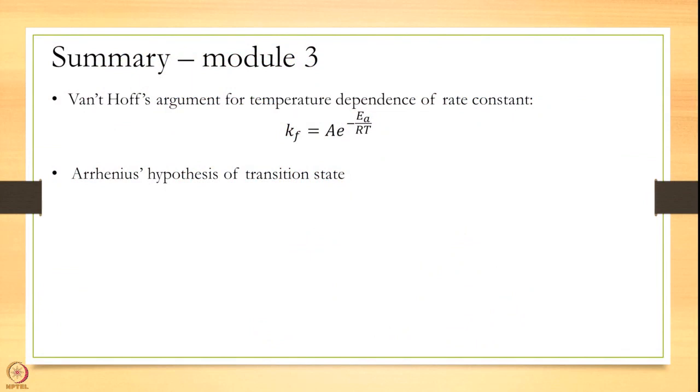In summary for this module we have looked at the analysis given by Van't Hoff, his argument on how he got the rate constant to be something like A into e to the power of some energy over RT. And we also looked at how Arrhenius looked at that equation and presented a physical picture out of it. Specifically he hypothesized the existence of transition state which is critical in our understanding of rate laws. So, with that we end today. Thank you very much.